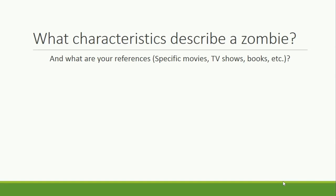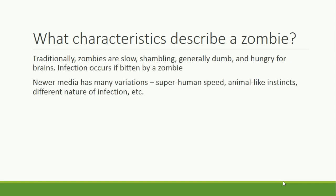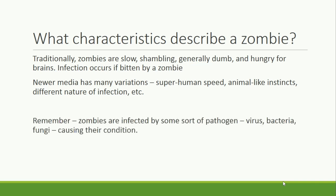What characteristics describe a zombie, and where did you see or hear about these characteristics? Pause the video and create a list of characteristics. Traditionally, zombies are slow, shambling, generally dumb, and hungry for brains. Infection occurs if bitten by a zombie. Newer media has many variations — some have superhuman speed, animal-like instincts, different nature of infection, and so on. Remember that zombies are infected by some sort of pathogen — virus, bacteria, or fungi — causing their condition.